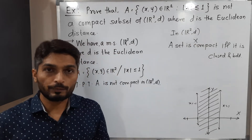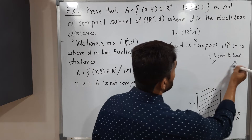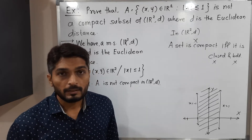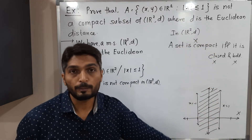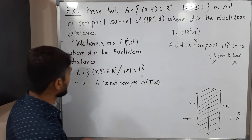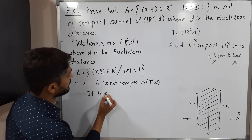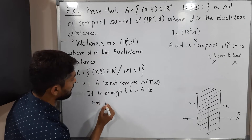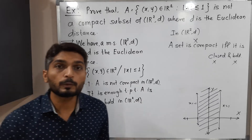Since we have to prove the set is not compact, we need to prove either the set is not closed or the set is not bounded. Looking at the diagram, you can see the strip extends to infinity upward and to minus infinity downward, so the set is clearly not bounded. Therefore, it is enough to prove that A is not bounded in ℝ²(d).